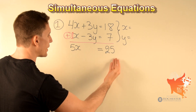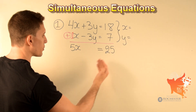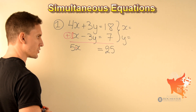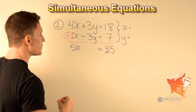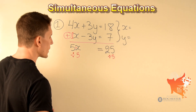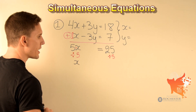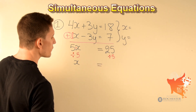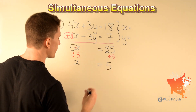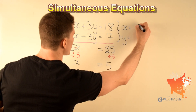We have eliminated the variable y and only have x. This equation is very simple to solve: 5x is equal to 25, meaning 5 times x equals 25. We divide both sides by 5. 5x divided by 5 is simply x, and 25 divided by 5 is equal to 5. So we have found that x is equal to 5.